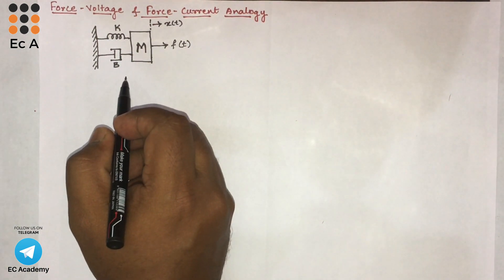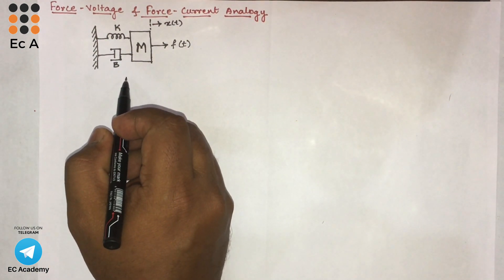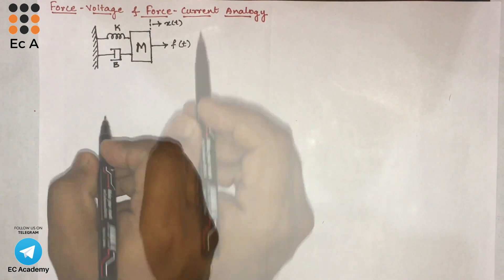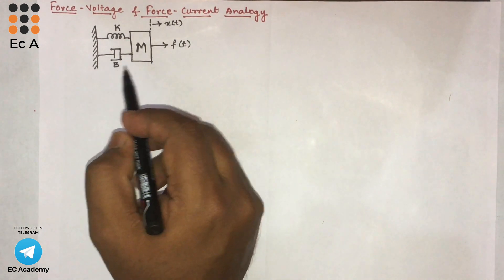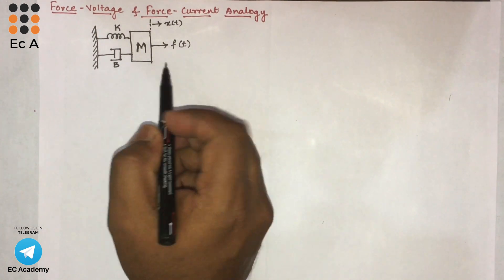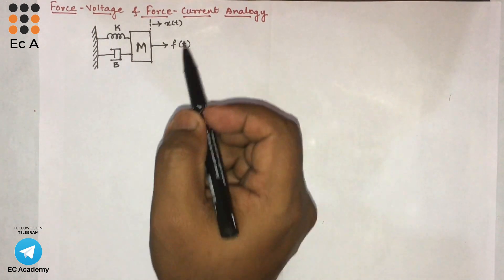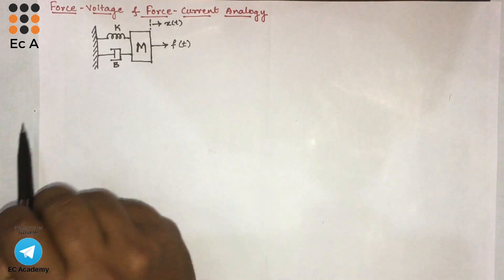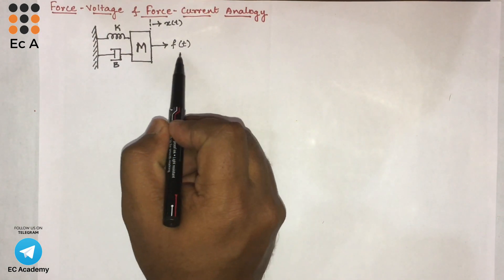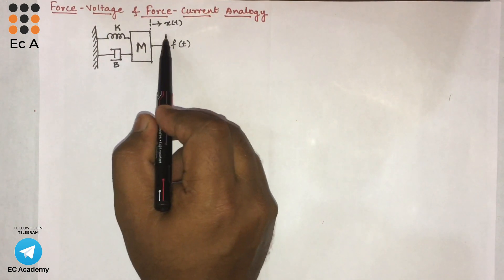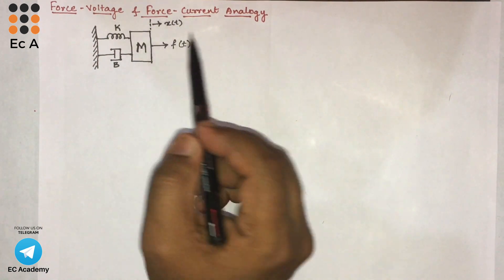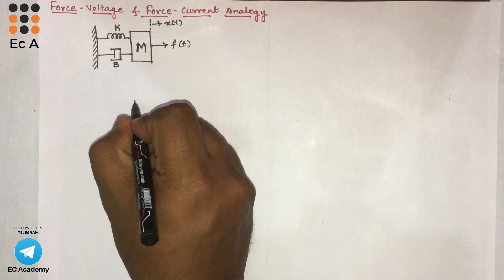This is the mechanical system which is given. For this mechanical system, first let us write the mechanical network. To write the mechanical network, let us go with the node analysis, where the number of nodes will be equal to number of displacements. In this mechanical system, f of t is the applied force and x of t is the displacement. Since we are having only one displacement, we can write only one node.